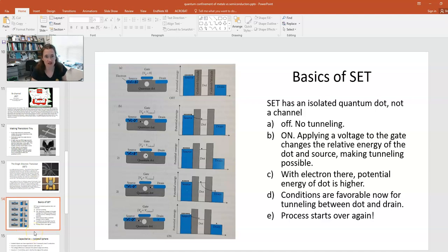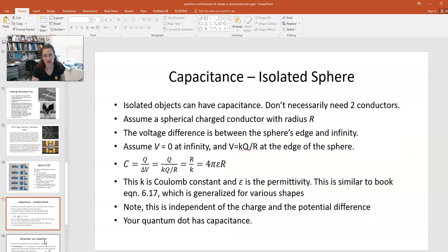So there's lots of interesting physics at play here. What we've got here is between our source and our drain, this little quantum dot conductive island. Now I said that it was a little tiny capacitor. So remember that isolated objects can have a capacitance associated with them. This is covered in a lot of introductory physics courses and electricity and magnetism courses, so you don't necessarily need two conductors.